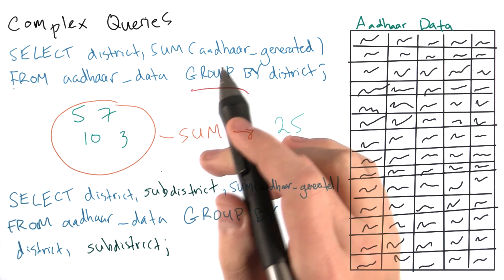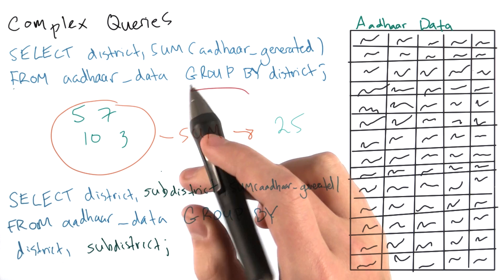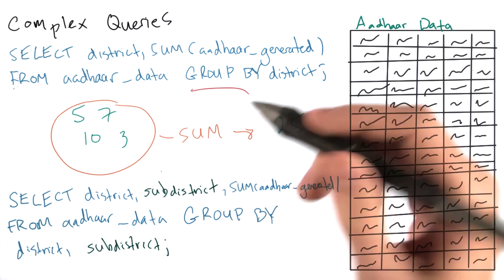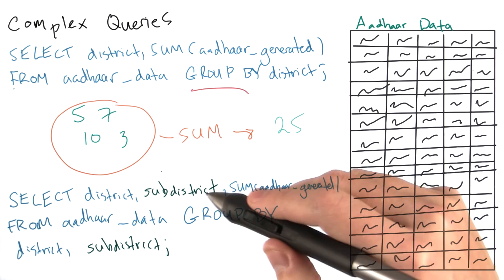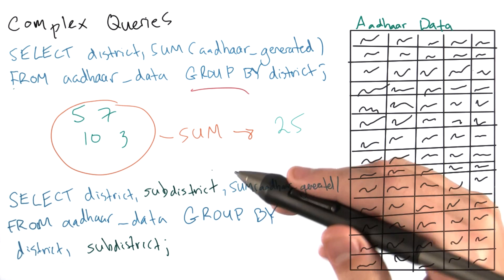We could also put a WHERE clause here. So in order to sum up Aadhar generated for people over 60 in each district, I can just add a WHERE clause in after the table name, as we discussed earlier.